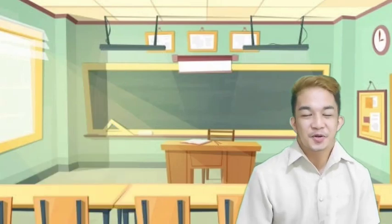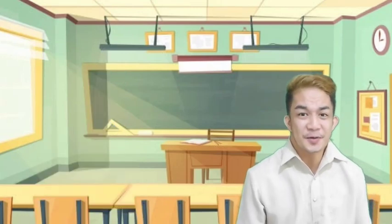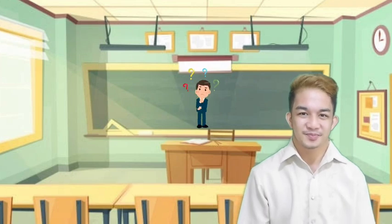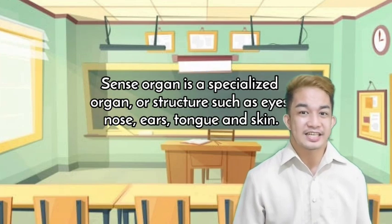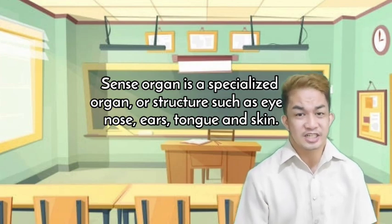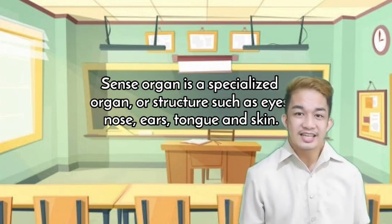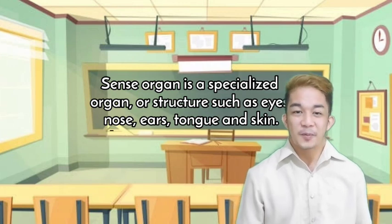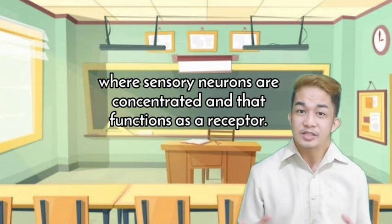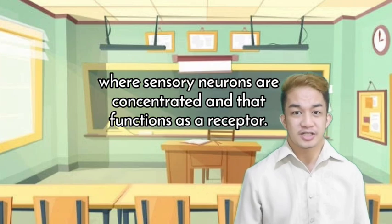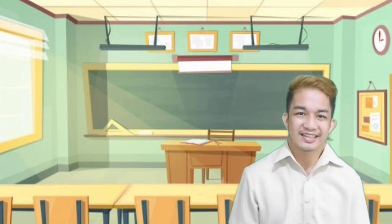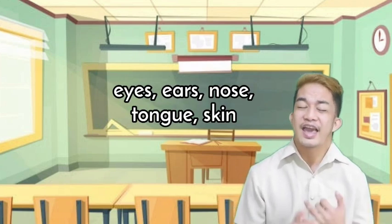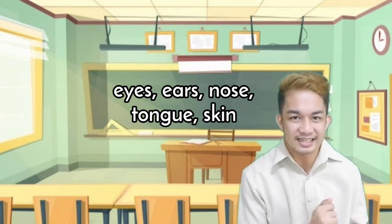Thank you so much for your cooperation, kids. So again, what are sense organs? Sense organs — it is a specialized structure such as eyes, nose, ears, tongue, and skin, where sensory neurons are concentrated and that functions as a receptor. Again, what are the five senses? They are the eyes, ears, nose, tongue, and skin.